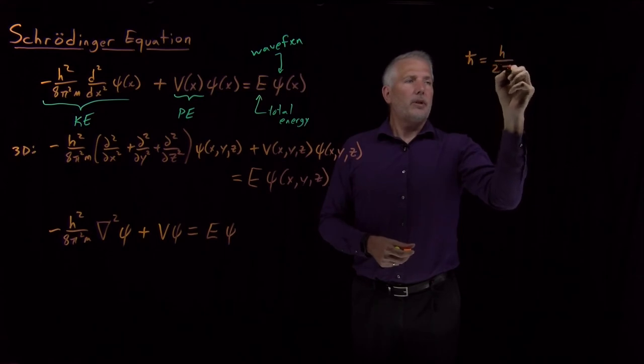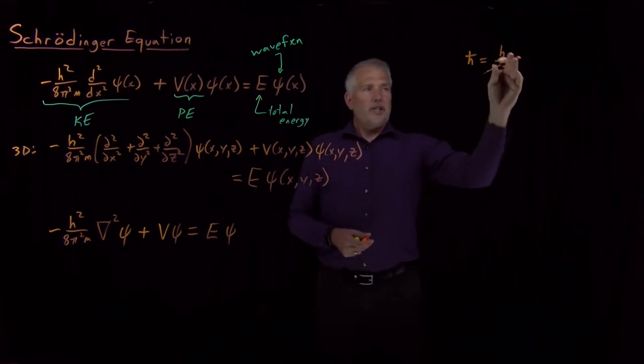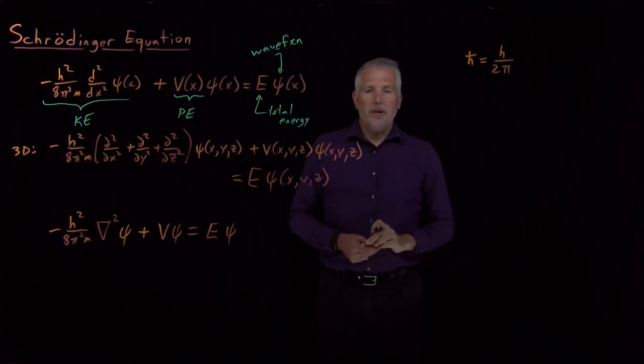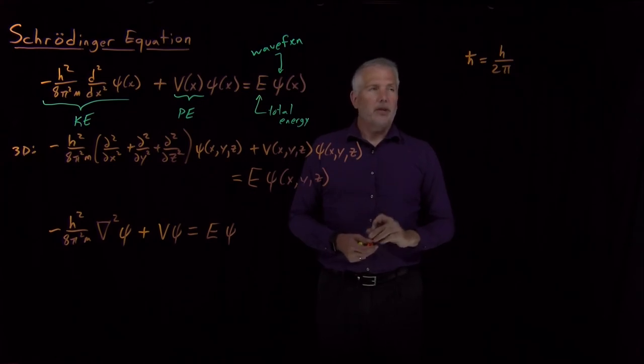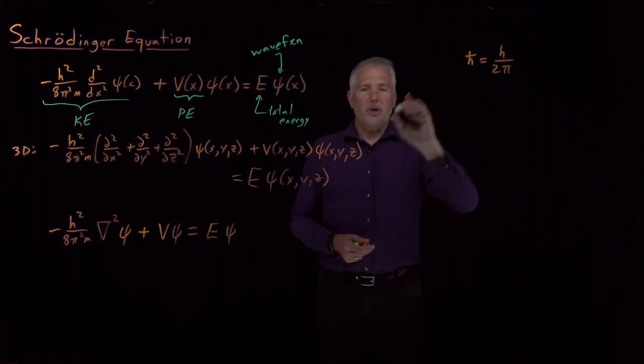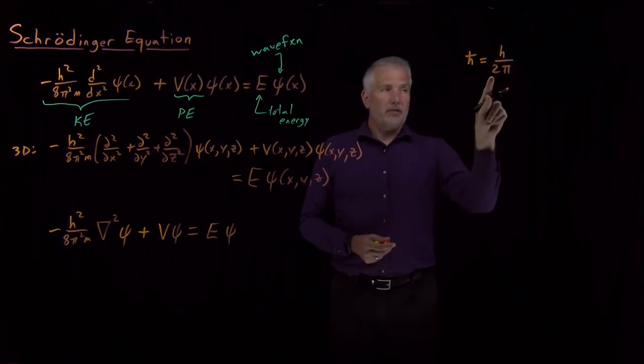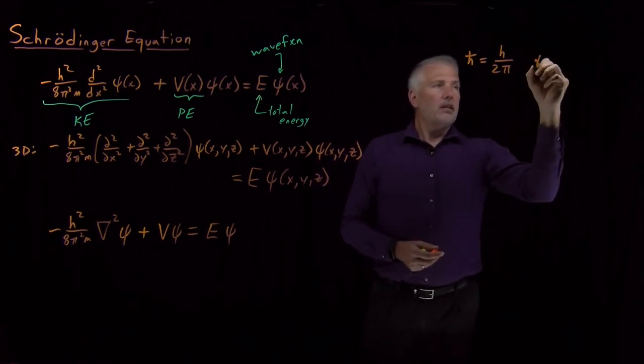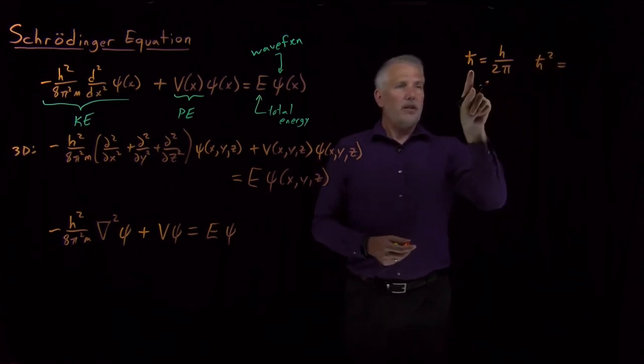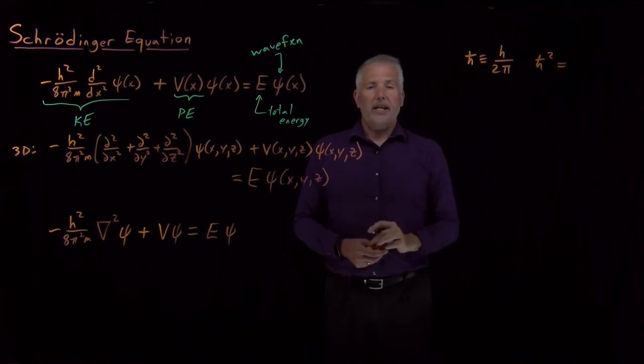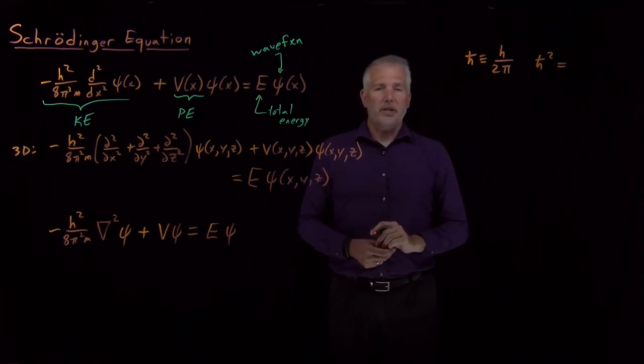h's frequently show up with some π's and some even numbers in the denominator. If we define this new quantity called ℏ (h-bar) to be Planck's constant, the regular Planck's constant that you can look up the value of on a table of constants, divided by 2π, then that new constant... I've defined that. I've chosen to define ℏ as equal to h/2π.